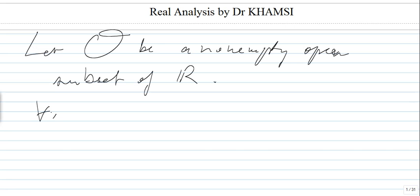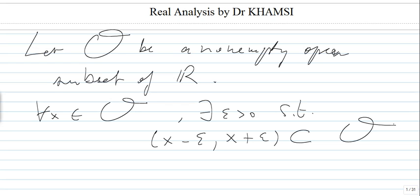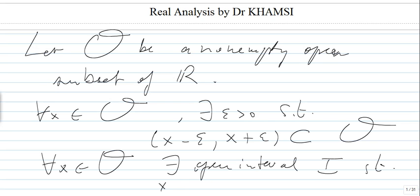So we know that for any x in O, there exists epsilon such that (x minus epsilon, x plus epsilon) is in O. That's the definition of open set - every point is an interior point. So what's interesting is that every point in O, you can find an open interval which contains x and is included in O. So for every x in O, there exists an open interval i such that x belongs to i and i is included in O.